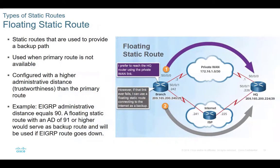Floating static routes — this is unique. You always want to have a router sitting out there that is really protective, so that if your network has any problems you can reroute things quickly. Floating static routes are used to prevent a backup path when the primary route is not available. Just understand in a nutshell: if you have a problem on your network, a router is sitting out there that can take the load and move it forward. That's load balancing with routers.